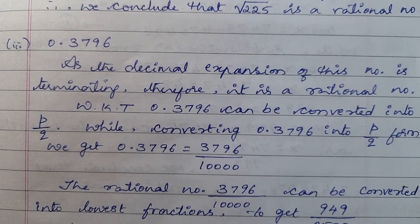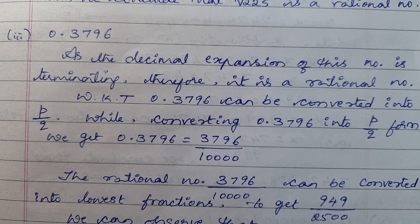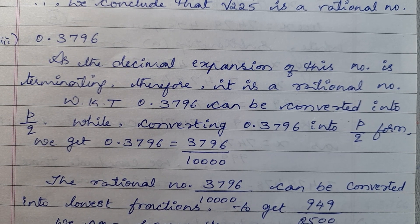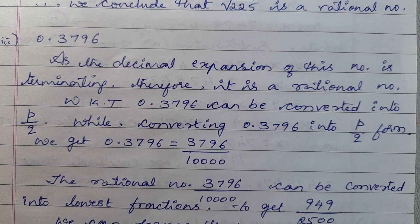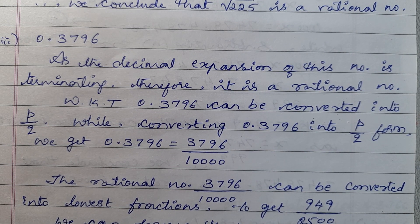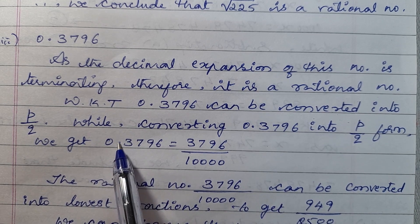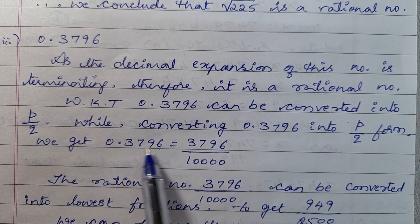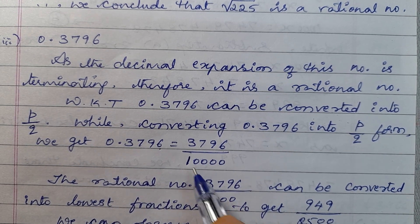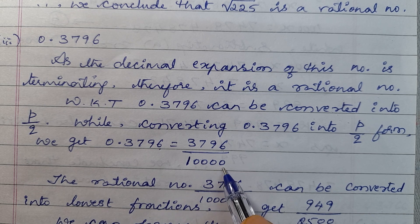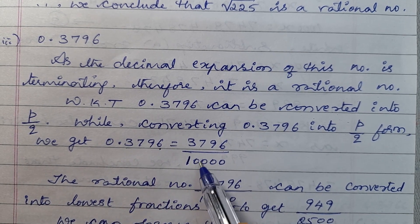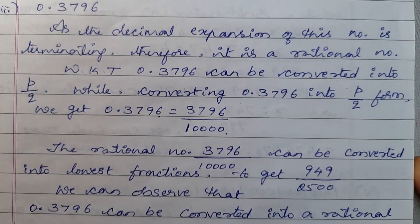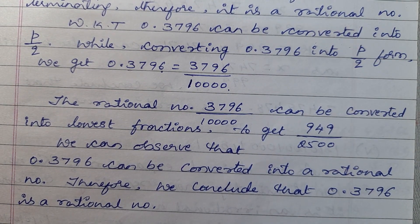Next, the third one: 0.3796. As the decimal expansion of this number is terminating, it is a rational number. We know that 0.3796 can be converted into P/Q form. While converting 0.3796 into P/Q form: there are four digits after the decimal point, so the denominator is 10,000. The rational number is 3796 divided by 10,000, which can be converted into lowest fractions.